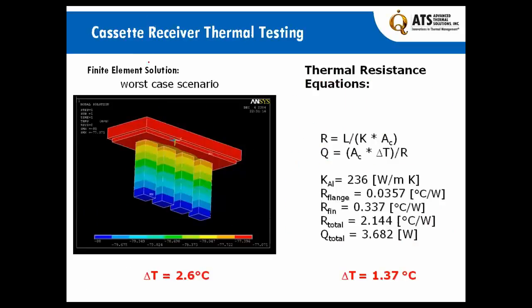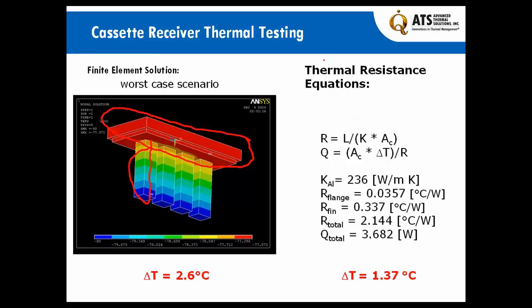The cassette receiver design is very similar in design to a classic heat sink approach. The cassette receiver is similar to a heat sink base, and then we have fins coming down, which are very similar to heat sink fins as they spread heat from the base down into the fins. A comparison point between medical industry cooling and classic electronics cooling is shown here, where we use the classic fin optimization equations and conduction equations to optimize this medical device, just like we would for a heat sink in a forced convection application.